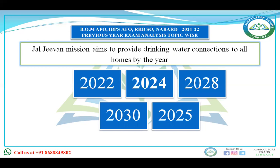Jal Jeevan Mission aims to provide drinking water connections to all homes by which year — 2022, 2024, 2028, 2030, or 2025? Jal Jeevan Mission is a scheme under the relevant ministry aimed to provide drinking water facility to all households. The target year is 2024. Till date, maximum total households covered is in UP, but the state with highest tap water supply coverage is Bihar.